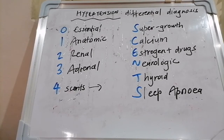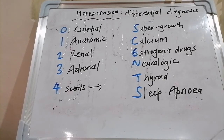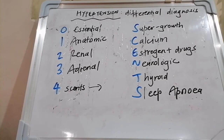For renal vascular workup, if more than two of the following are present — sudden onset or worsening hypertension, age less than 30 or above 55, abdominal bruit, resistance to more than three anti-hypertensives, creatinine rise above 30% with ACE inhibitor or ARB use, other atherosclerotic disease, or recurrent flash pulmonary edema — then consider renal Doppler ultrasound, CT or MR angiogram, and/or renal angiogram. If you suspect sleep apnea, do a sleep oximetry test.